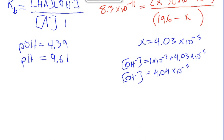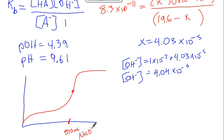That's the hydroxide concentration. Now I can find the POH pretty easily. The POH equals the negative log of that answer, which is 4.39. Therefore, the pH is 9.61 at the equivalence point. Let's look at a titration graph. The pH rises, levels out, then shoots up sharply. That's our equivalence point at 510 milliliters of base added.